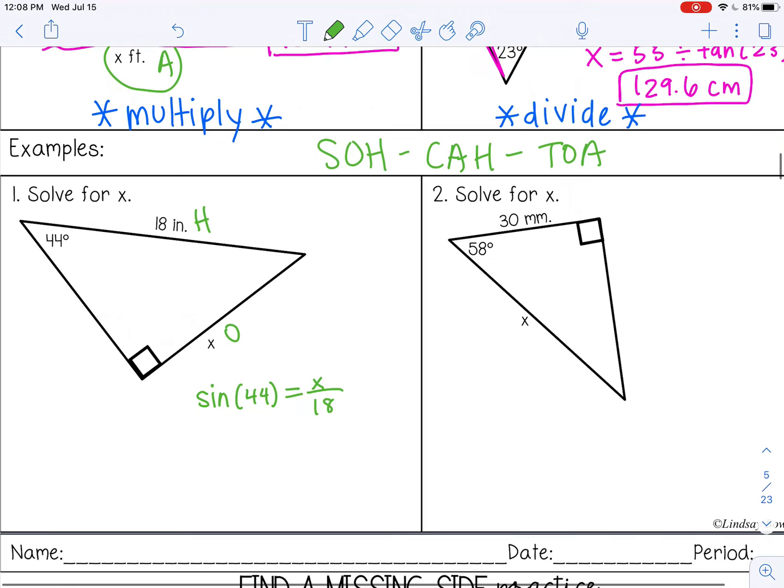So x is in the numerator. I'm going to be multiplying on both sides. In my calculator, I'm going to type 18 times the sine of 44, and you get about 12.5 inches.